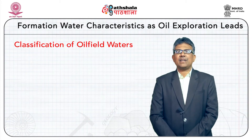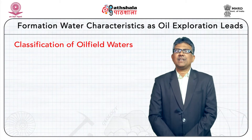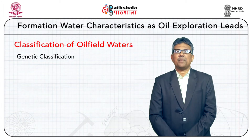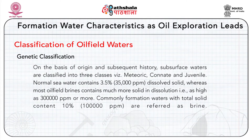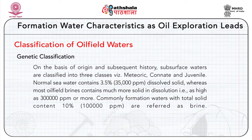Formation waters are classified under different schemes. Under the genetic classification scheme, subsurface waters are classified into three classes based on origin and subsequent history: meteoric, connate, and juvenile. Normal sea water contains 3.5 percent — that is 35,000 ppm — dissolved solids, whereas most oil field brines contain much more: as high as 300,000 ppm or more.